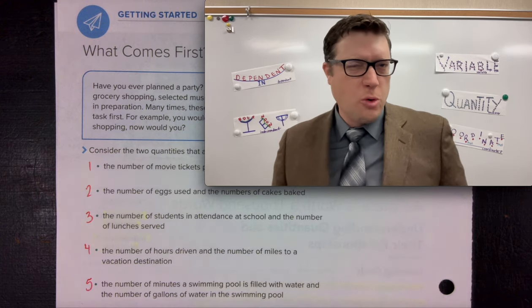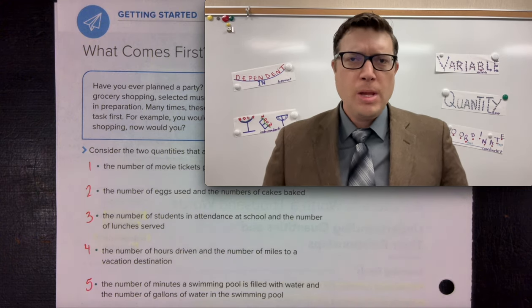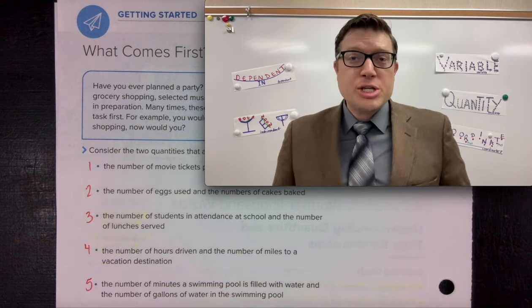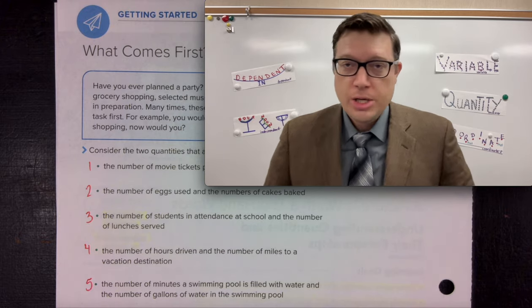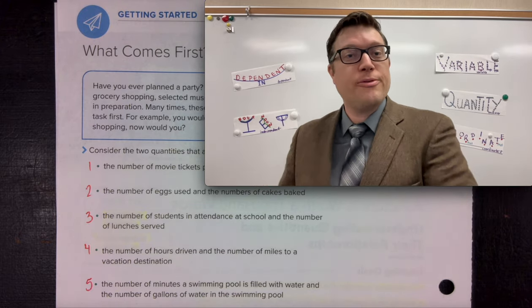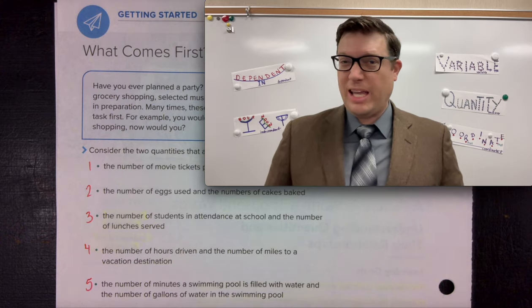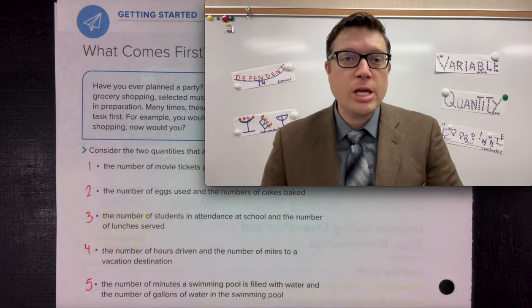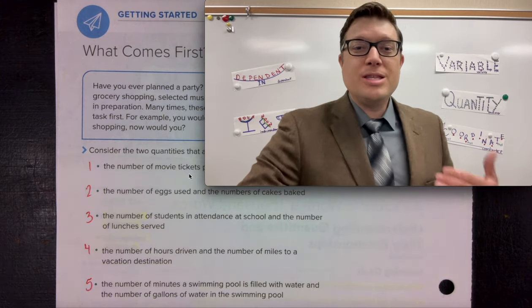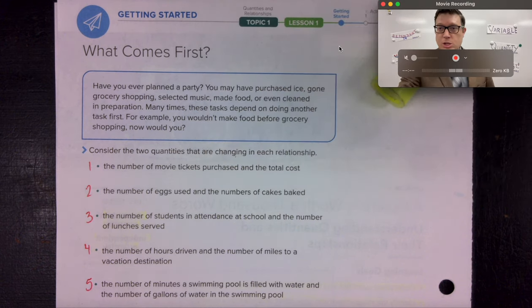We're on page four of lesson one. In this section we're going to do what we call the 'Getting Started.' After the lesson launch and spiral review, we're going to follow up with a conversation about the dependent versus independent quantity when we talk about situations.